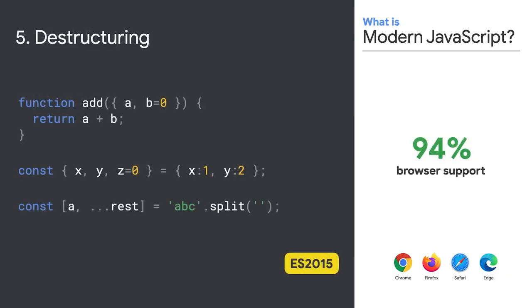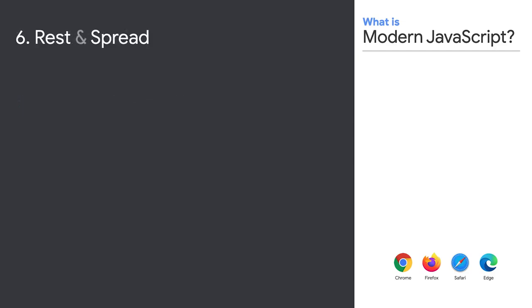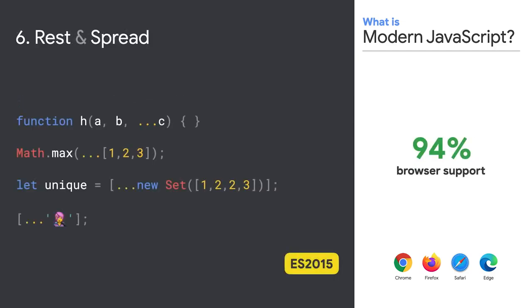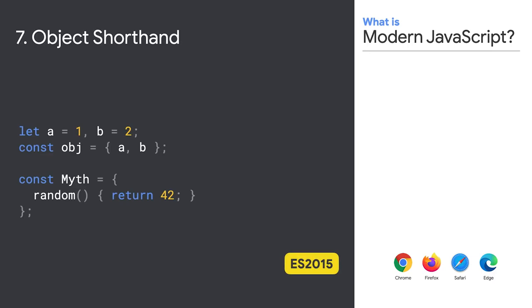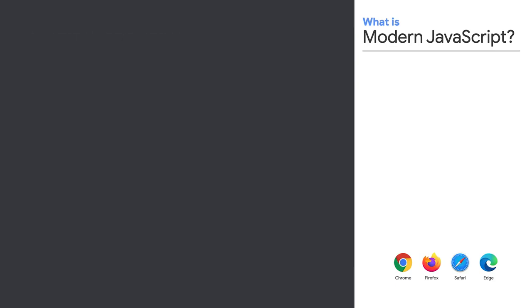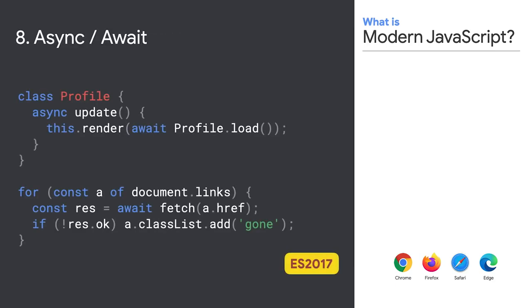Destructuring has 94% support. Rest parameters and array spread, also 94%. Object shorthand — which was easy to forget wasn't in the language before ES2015 — now has 95% browser support. And finally, async/await, which even though it was an ES2017 feature, has 95% browser support. This is easily my favorite feature of the language. Not generators?